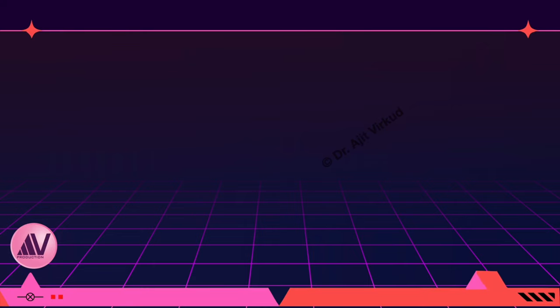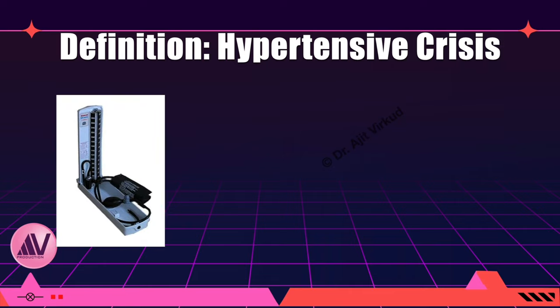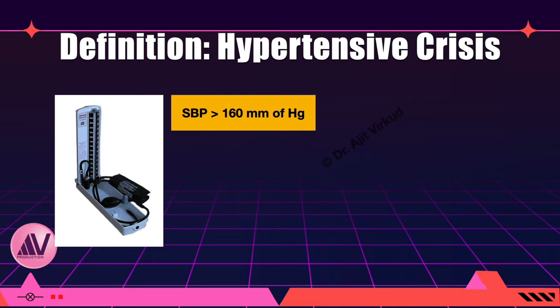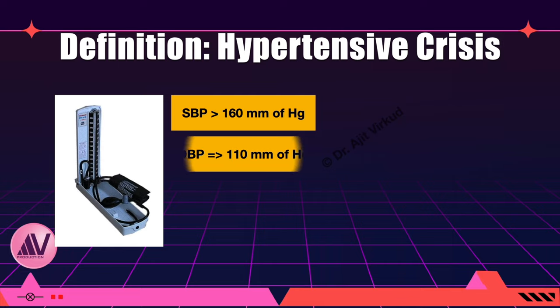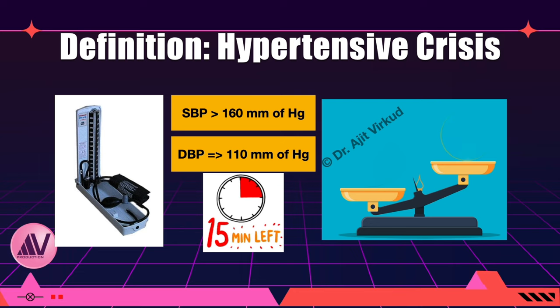Hypertensive crisis is defined as acute onset severe hypertension, accurately measured using standard techniques, associated with symptoms. The criteria are: systolic blood pressure greater than 160 mmHg and/or diastolic blood pressure greater than or equal to 110 mmHg, persistent for 15 minutes or more. Please remember that as per our current understanding, systolic blood pressure is more important in predicting a seizure or cerebral injury than diastolic blood pressure.